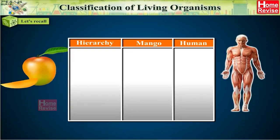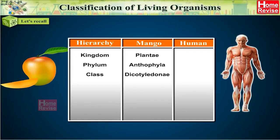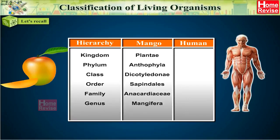Let's look at this table. The hierarchy for mango: Kingdom Plantae, Phylum Anthophila, Class Dicotyledonae, Order Sapindales, Family Anacardiaceae, Genus Mangifera, Species indica. The hierarchy for human: Kingdom Animalia, Phylum Chordata, Class Mammalia, Order Primates, Family Hominidae, Genus Homo, Species sapiens.